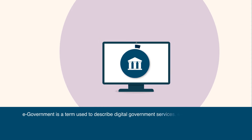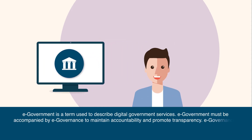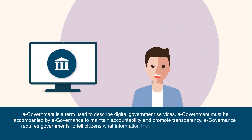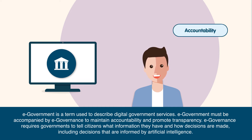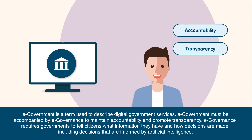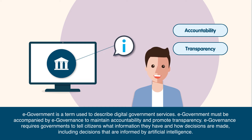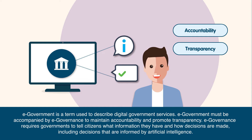E-government is a term used to describe digital government services. E-government must be accompanied by e-governance to maintain accountability and promote transparency. E-governance requires governments to tell citizens what information they have and how decisions are made, including decisions that are informed by artificial intelligence.